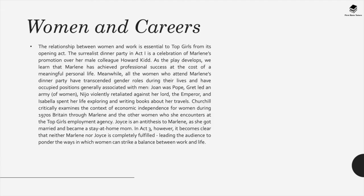On to theme analysis. Women and careers: the relationship between women and work is essential to Top Girls from its opening act. The surrealist dinner party in Act 1 is a celebration of Marlene's promotion over her male colleague Howard Kidd. As the play develops, we learn that Marlene has achieved professional success at the cost of a meaningful personal life. Meanwhile, all the women who attend Marlene's dinner party have transcended gender roles during their lives and occupied positions generally associated with men: Joan was Pope, Gret led an army, Nijo violently retaliated against her lord the emperor, and Isabella spent her life exploring and writing books about her travels. Churchill critically examined the context of economic independence for women during the 1970s, written through Marlene and the other women she encounters at the Top Girls employment agency.